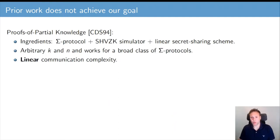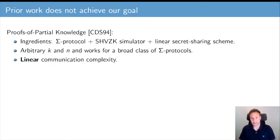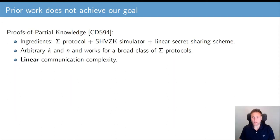There has been prior work on proofs of partial knowledge. However, for different reasons, prior work does not achieve our goal. The proofs of partial knowledge introduced by Kramer, Damgaard and Schoenmakers in 1994 use a basic sigma protocol, a special honest verifier zero-knowledge simulator, and a linear secret sharing scheme. Their approach works for arbitrary k and n and for a broad class of sigma protocols. However, their approach has linear communication complexity, linear in n.